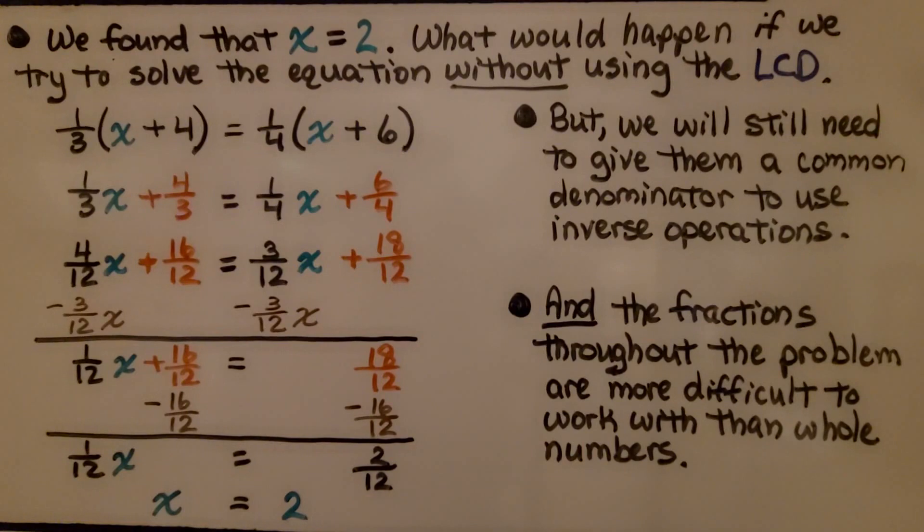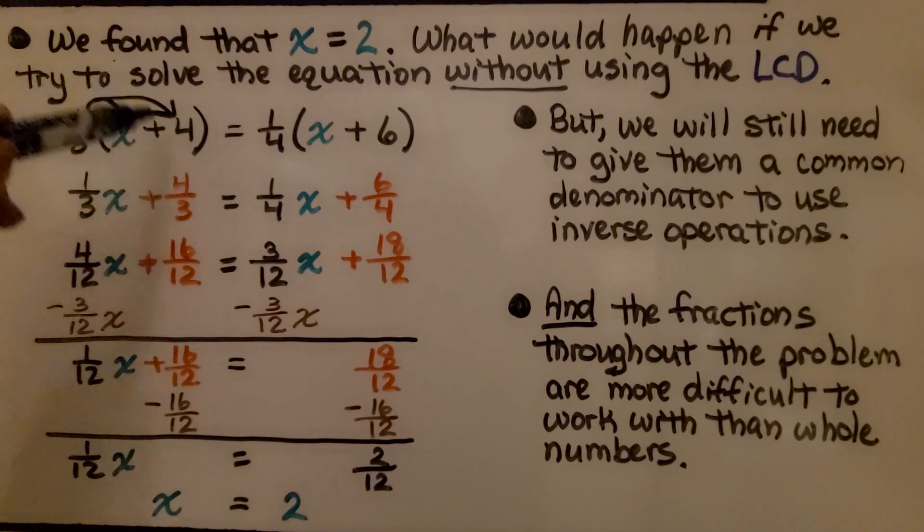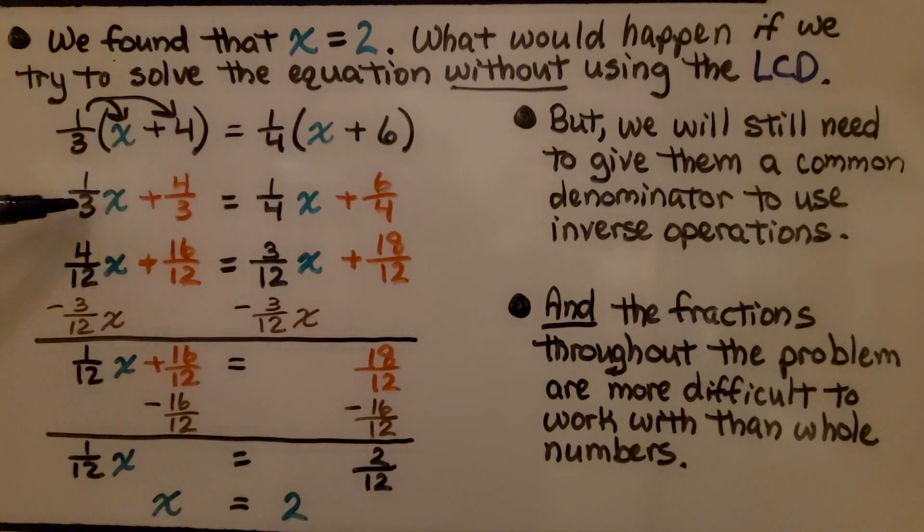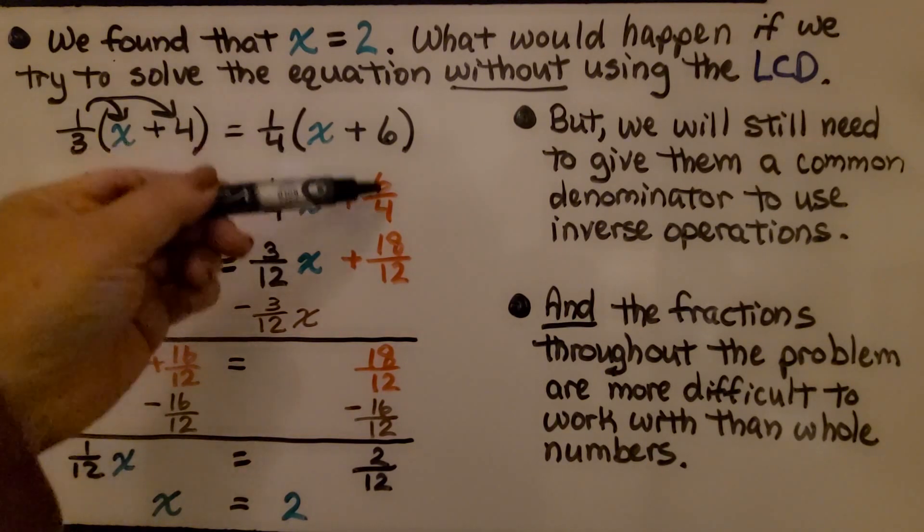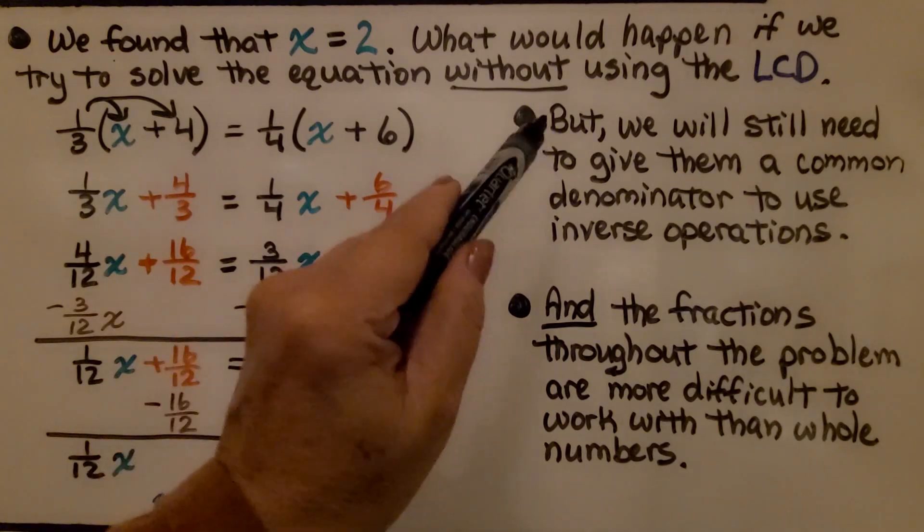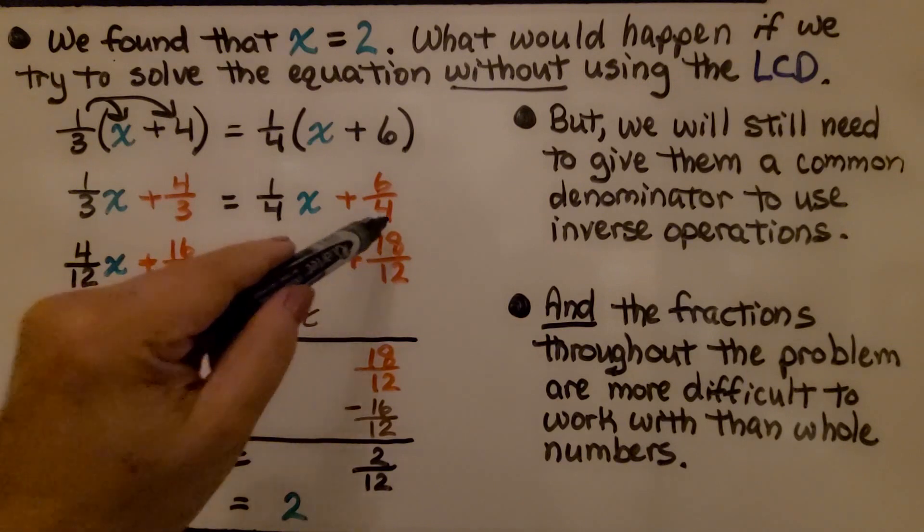So we just found in that equation that x is equal to 2. What would happen if we try to solve the equation without using the lowest common denominator? What if we just right away distributed the 1/3 to the x and the 1/3 to the 4? We would get 1/3 x plus 4/3 and it would be equal to 1/4 x plus 6/4. How are we going to do inverse operations when all the denominators are different? We're still going to need to give them a common denominator to use inverse operations. So we have to give them all a denominator of 12. So we still did it. We still found the least common denominator. We have 4/12 x plus 16/12 is equal to 3/12 x plus 18/12.